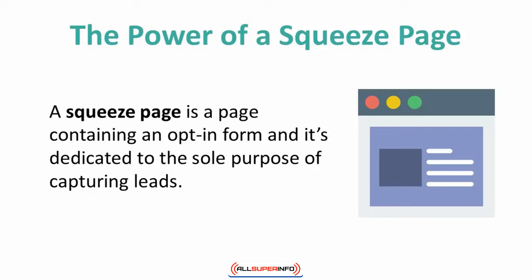If a person has arrived on your squeeze page from another link, they want to be certain that they are definitely signing up for exactly what they clicked on. If your layout is inconsistent with their expectation, you will certainly drive them away. The squeeze page should have a bulleted list of things that they are going to receive by opting in. This is your time to convince the visitor why they should give you their contact information, so you want to make it good.